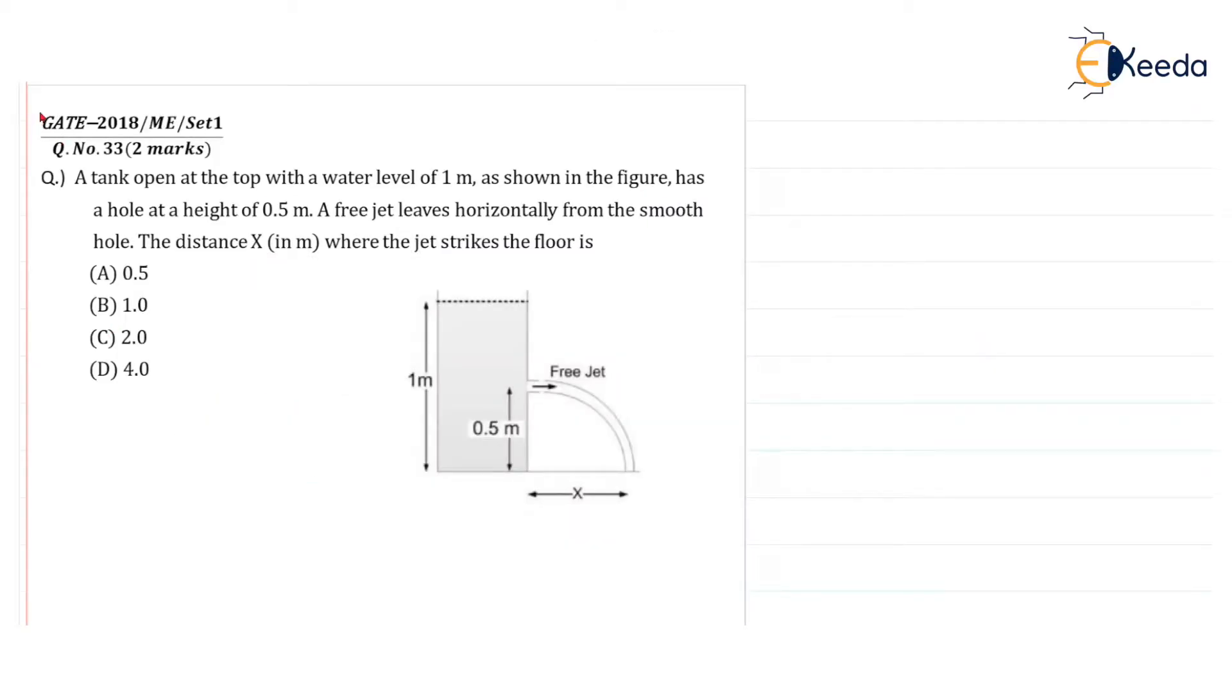As per the given question in GATE 2018, Mechanical Engineering set 1, question number 33 for two marks. A tank open at the top, this is the free surface of water, a tank open at the top with a water level of 1 meter as shown in the figure has a hole at a height of 0.5 meter.